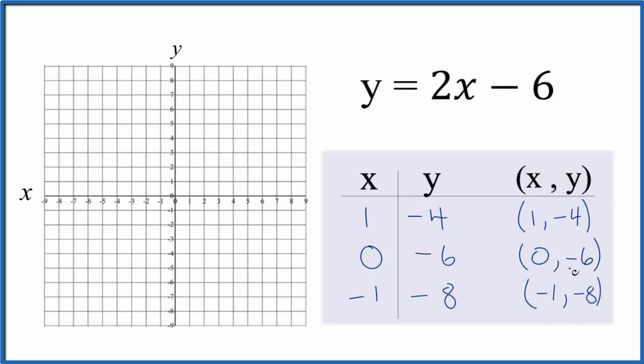So these are the points that we'll graph for the equation y equals 2x minus 6. So we have, let's see, x is 1, y is negative 4. So x is 1, we go down to negative 4 on the y axis.